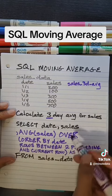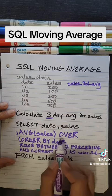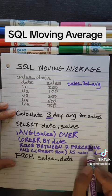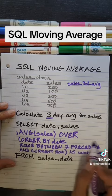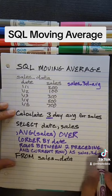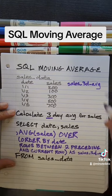So we have our average function and then we use window options where we order by date. The rows we're using are the two preceding rows as well as the current row in order to calculate our three-day average.